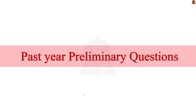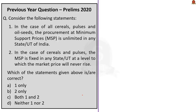Let us take the first past prelims question. Consider the following statements. Statement 1: In the case of all cereals, pulses and oil seeds, the procurement at minimum support price is unlimited in any state or union territory of India. Statement 2: In the case of cereals and pulses, the MSP is fixed in any state or union territory at a level to which the market price will never rise. Which of the statements given above are correct? A: One only, B: Two only, C: Both 1 and 2, D: Neither 1 nor 2.